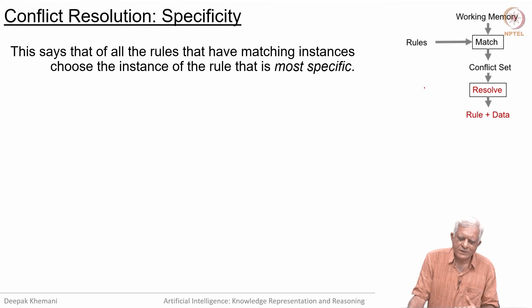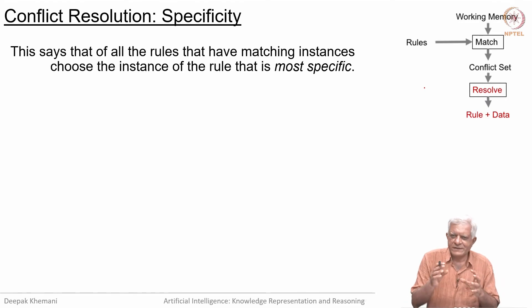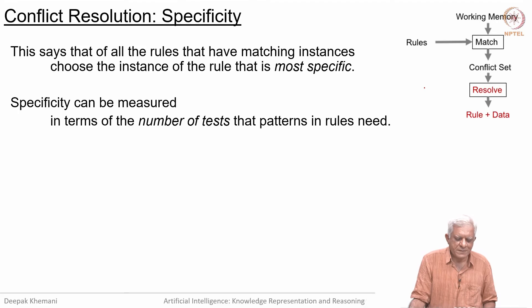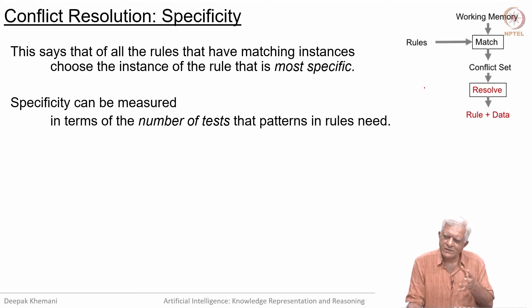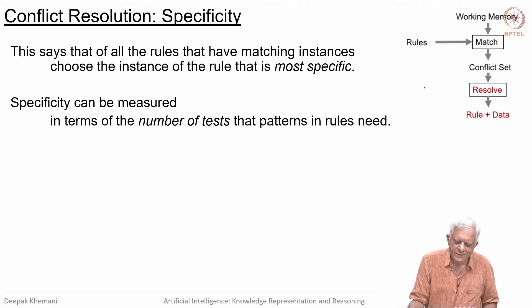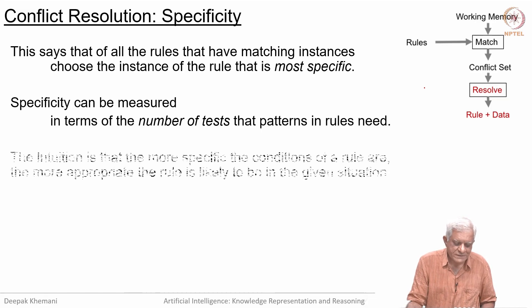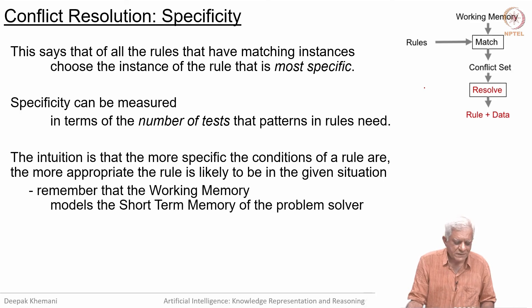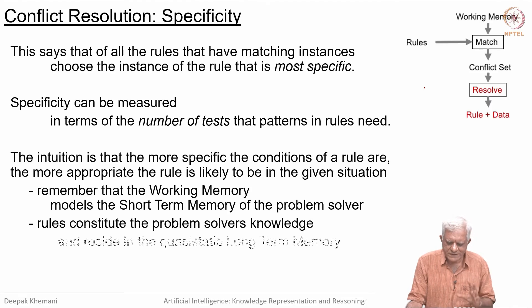Another strategy is called specificity. It says that of all the rules that have matching instances, choose the instance of the rule that is most specific. If one rule matches two pieces of data and another matches five pieces of data, choose the one that matches more data — it is more specific. Specificity can be measured in terms of the number of tests that the patterns in the rule require. For example, in the swap program, the rule tests that one element has a certain value, another element has a greater index but smaller value — you count those tests to determine which rule instance is more specific. The intuition is that the more specific the conditions of a rule are, the more appropriate the rule is likely to be in a given situation.